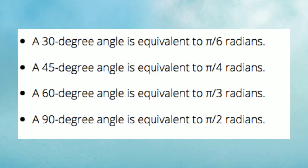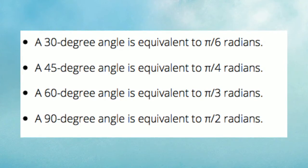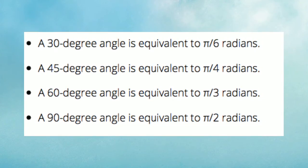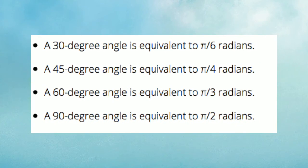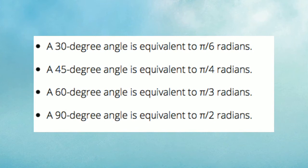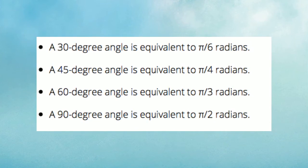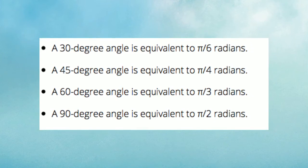Here are some common radians to degree measurements. A 30 degree angle is equal to pi over 6 radians. A 45 degree angle is pi over 4 radians. A 60 degree angle is pi over 3 radians. And a 90 degree angle is pi over 2 radians.